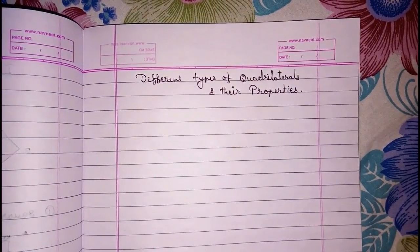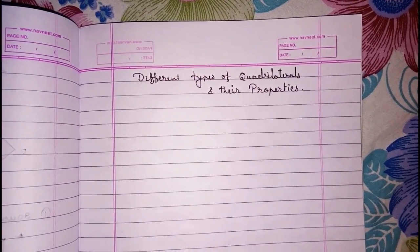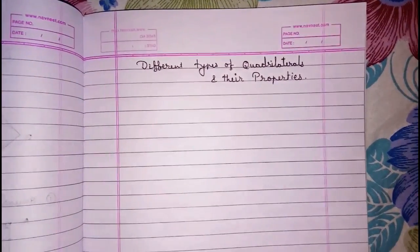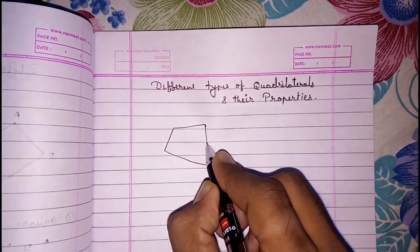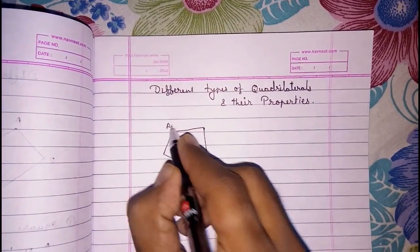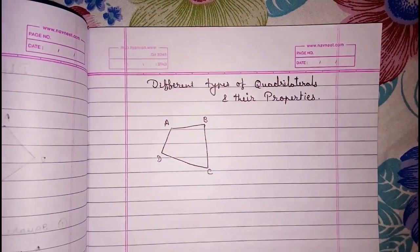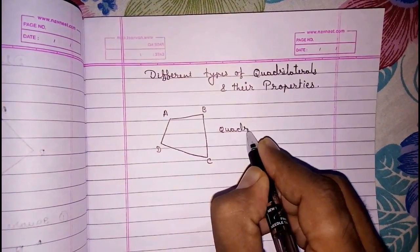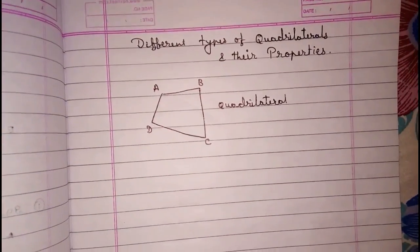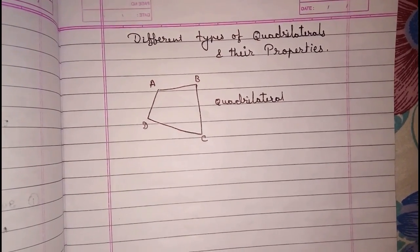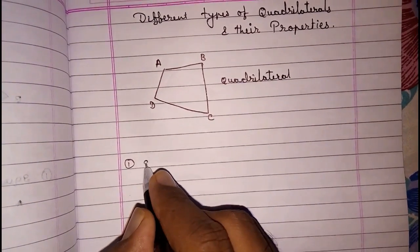Hello friends, today we are going to study about different types of quadrilaterals and their properties. First of all, we should know what is a quadrilateral. A quadrilateral is a closed figure made up of four line segments. Look at this — this is a quadrilateral ABCD made up of four line segments and it is also closed. Today we are going to study about different types of quadrilaterals, their names and their properties. The first quadrilateral we are going to study is the square.